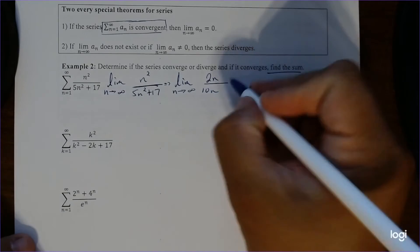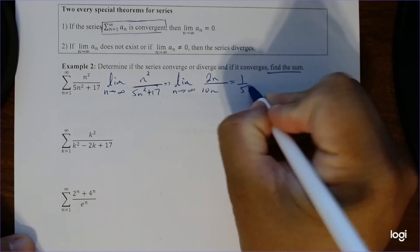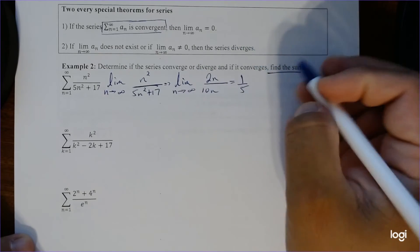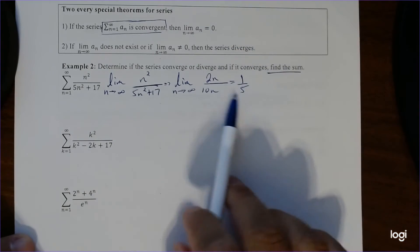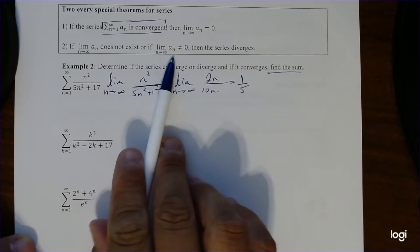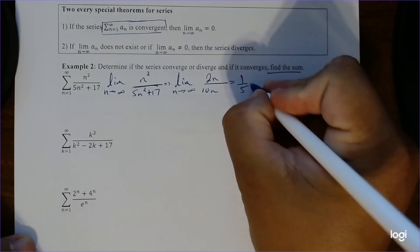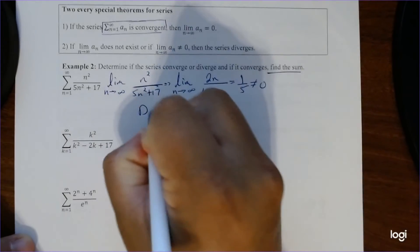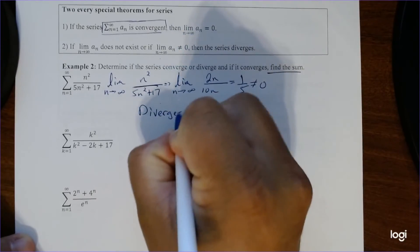So notice that we can simplify, and this ends up being 1 fifth. And taking a limit as 1 fifth is just 1 fifth. And notice, we took the limit as n goes to infinity, and this does not equal 0, so therefore, by a divergence test, this diverges. And there we go.